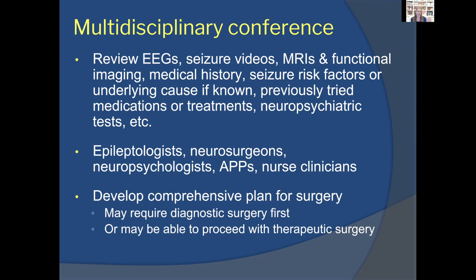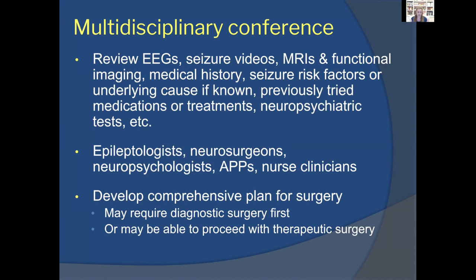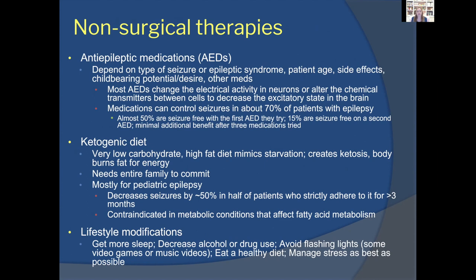Once we have all the information — EEGs, MRIs, other imaging, medical history, and exams — the team discusses the best approach. This multidisciplinary team includes epileptologists, neurosurgeons, neuropsychologists, neuroradiologists, and nurse clinicians. Sometimes we can proceed directly to therapeutic surgery; other times a diagnostic surgery is needed first. Before offering surgery, we ensure the patient has tried non-surgical therapies, including anti-epileptic medications.